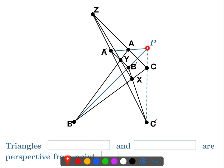We have to find two triangles in this picture that give us that. We look at the point P — we want two sides to extend and intersect at P. There's not too much choice here. We have the line through AA' going through P and the line through BB' going through P. So AA' is going to be one side and BB' is going to be another side. We extend those and they intersect at P.